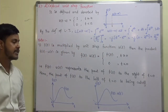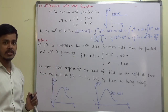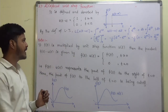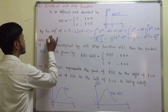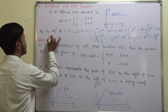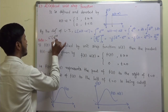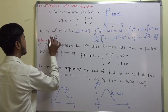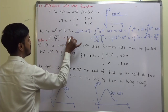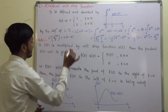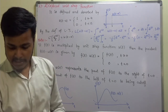So the Laplace transform of the displaced unit step function u(t − a) is e^(−as)/s. Equivalently, the inverse Laplace transform of e^(−as)/s equals u(t − a).